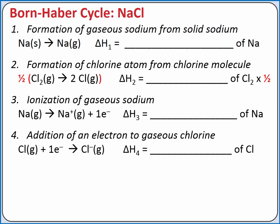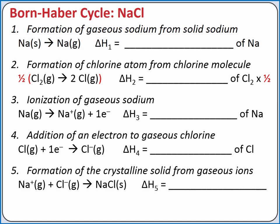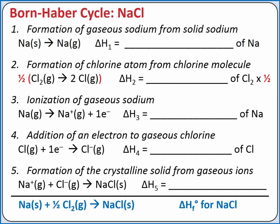So the enthalpy change for this step is the first electron affinity of chlorine. Our last step is to combine the two gaseous ions to form a crystal lattice. The energy released when gaseous ions combine in a crystal lattice to form an ionic solid is called the lattice energy. So the enthalpy change for this step is the lattice energy of sodium chloride. When we add all of these steps together, we get the enthalpy of formation equation for sodium chloride.